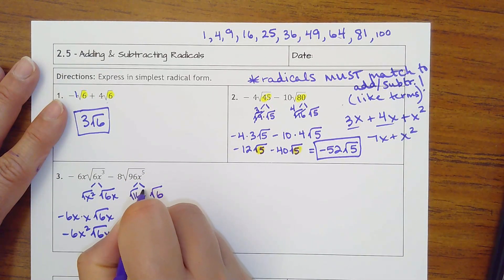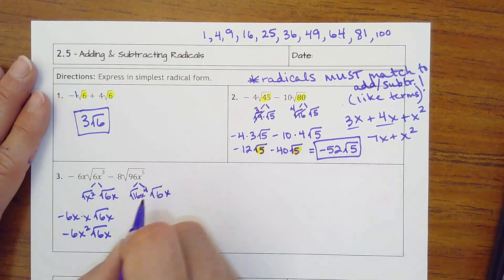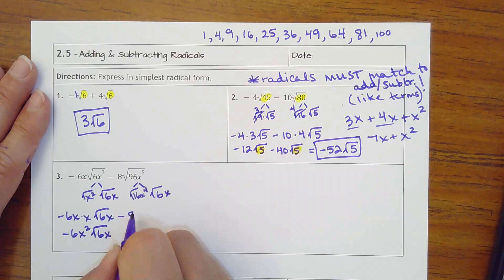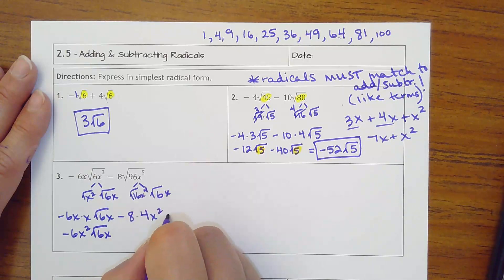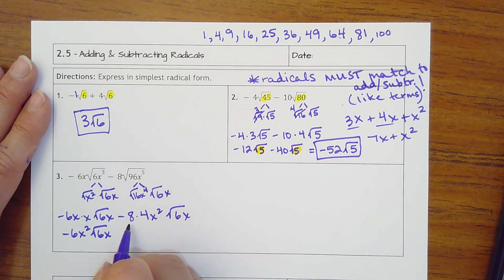x to the 5 needs to go down to x to the 4 with a leftover. So that's going to be minus 8 times, square root of 16 is 4, x squared, square root of 6x. It'll be negative 32x squared square root of 6x.